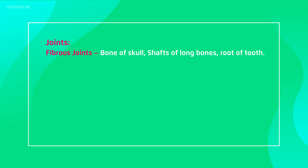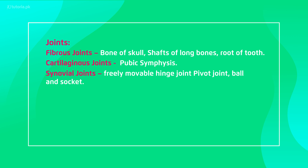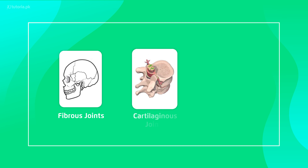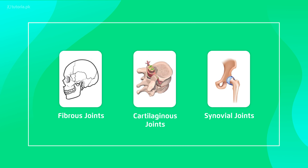We have three types of joints. One is fibrous joints, which cannot move from their place — like the skull, root of teeth, and other fixed structures. Then we have cartilaginous joints, which have cartilage and allow some movement. Third is the synovial joint, which can freely move — like our arm, wrist, hip joints, and neck joints, which we call synovial joints.